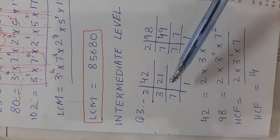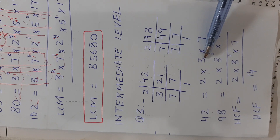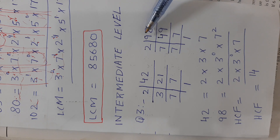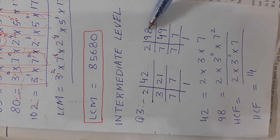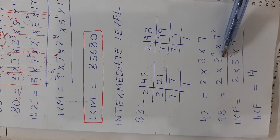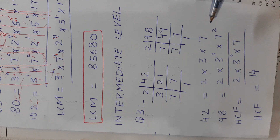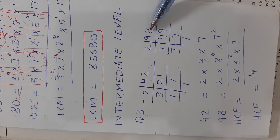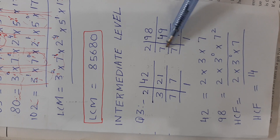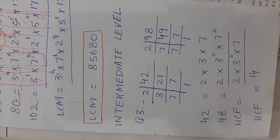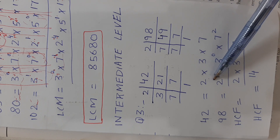The factor 3 appears in 42 but not in 98, so instead of leaving that space empty, enter 3 to the power 0. Next, 42 has one factor of 7 while 98 has 7², so write 7² in the factors of 98 in the same column. Now because we have to find the HCF, take out the number from each column having the least power.